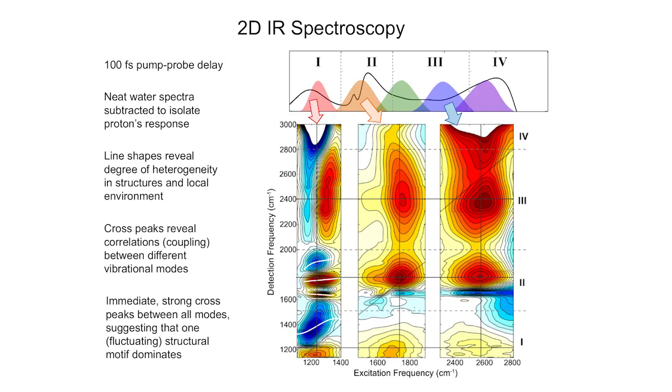The experiment we used is called two-dimensional infrared spectroscopy, or 2DIR. In 2DIR, the vibrational transitions are resolved along both the pump and probe axes. The extra dimension contains much more information than conventional 1D spectra. These spectra shown here were taken at 100 femtosecond delay time between pump and probe pulses, fast enough to capture frozen snapshots of the proton structures before the water molecules have a chance to move.